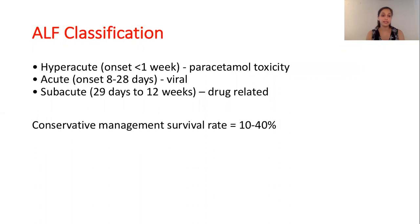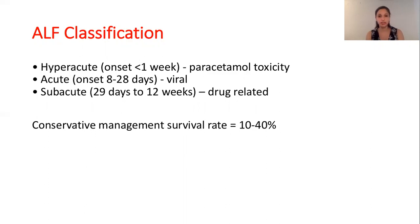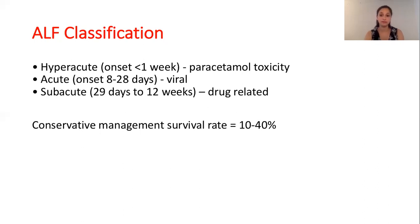There is a common ALF classification divided into three areas, defined by the speed of onset of encephalopathy from the time the patient becomes symptomatic. It can be hypoacute with an onset of less than one week, commonly seen in paracetamol toxicity; acute with an onset of 8 to 28 days, usually seen in viral cases; and subacute, 29 days to 12 weeks, which can be drug related. The conservative management survival rate is between 10 and 40% in these patients.